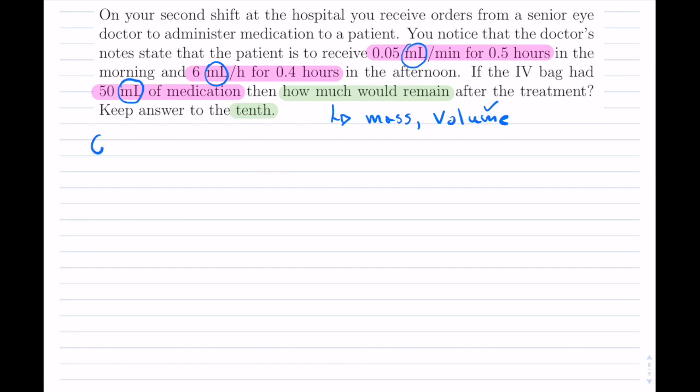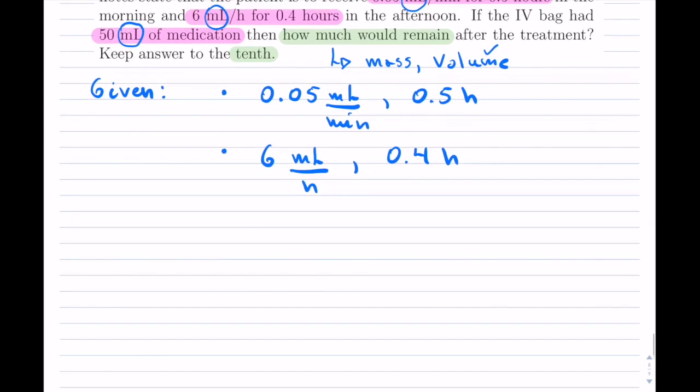Now, let's write the givens. We have, so first, 0.05 mL/min, and that was for half an hour, and second, 6 mL/h, and that was for 0.4 of an hour. So that's what we have, and then finally, we know that in total, we have 50 milliliters.